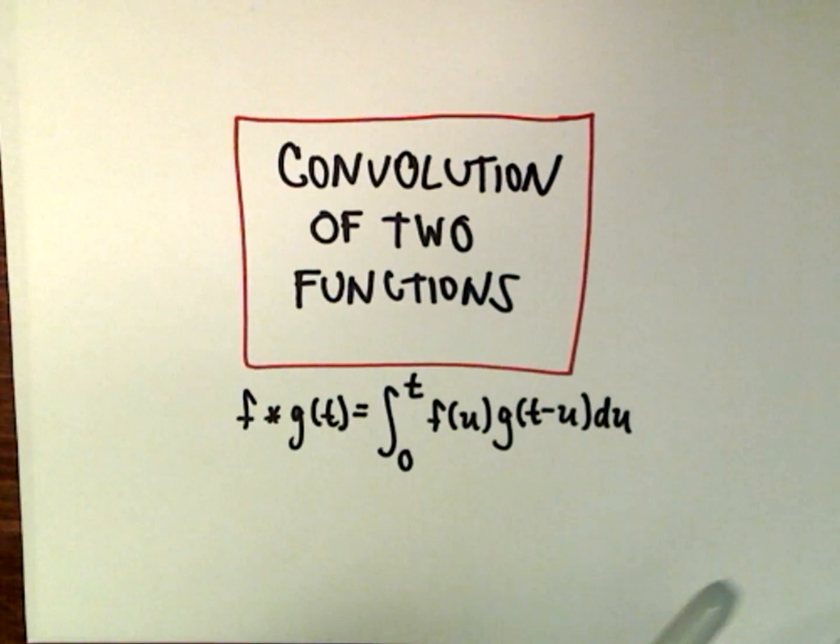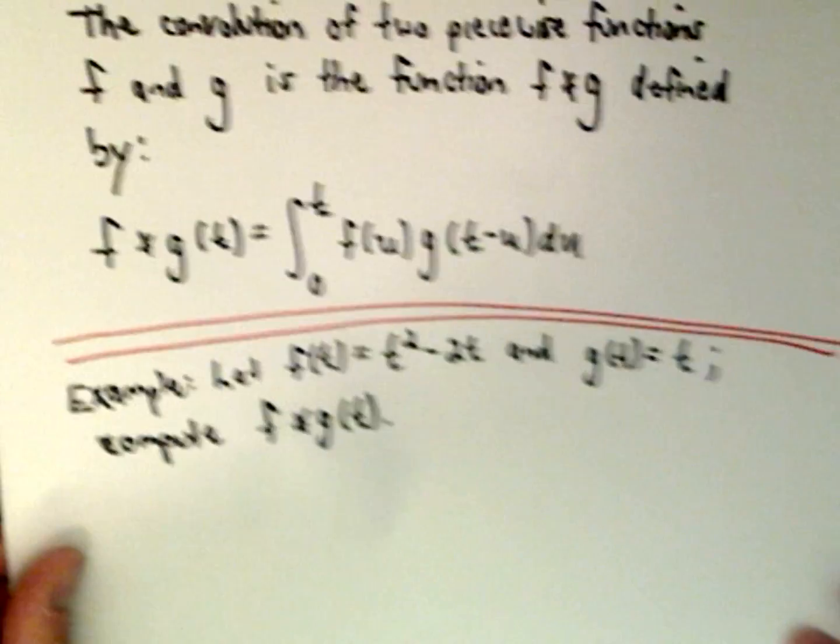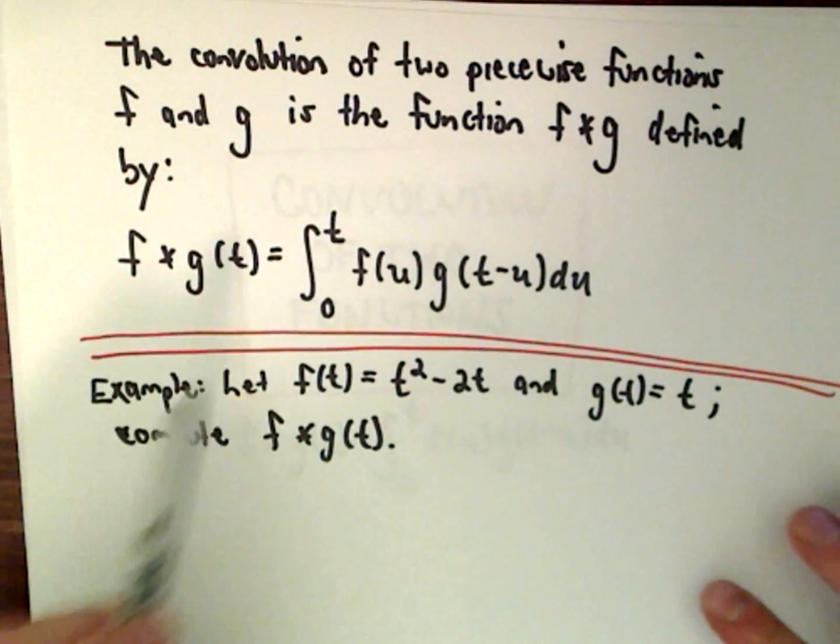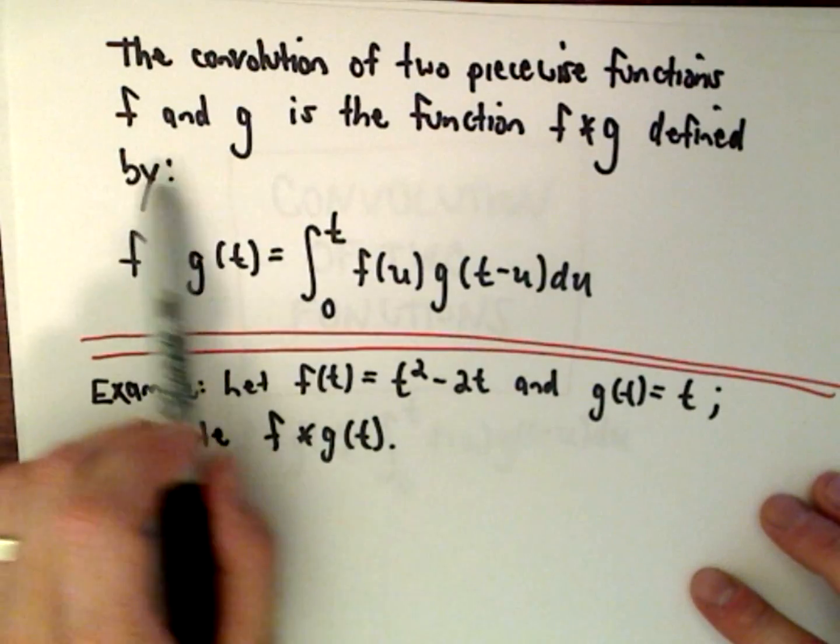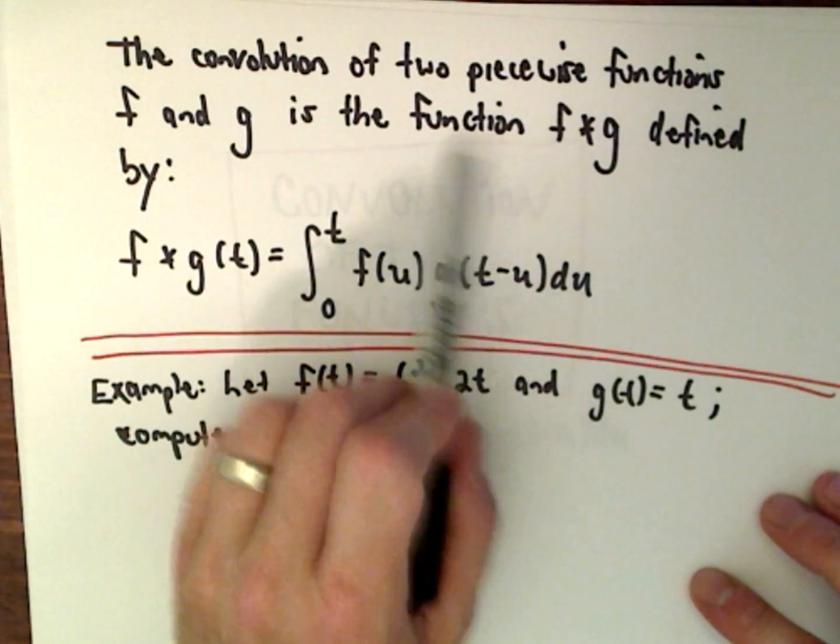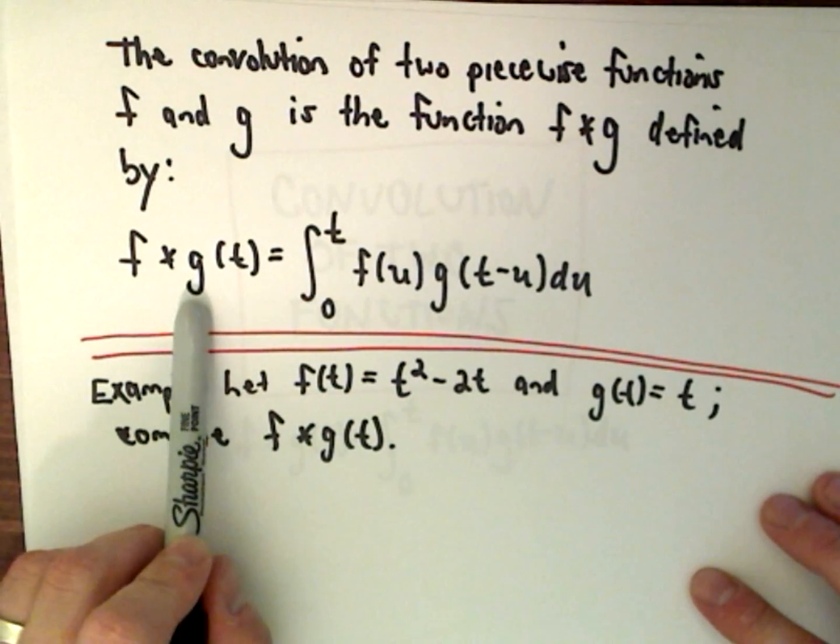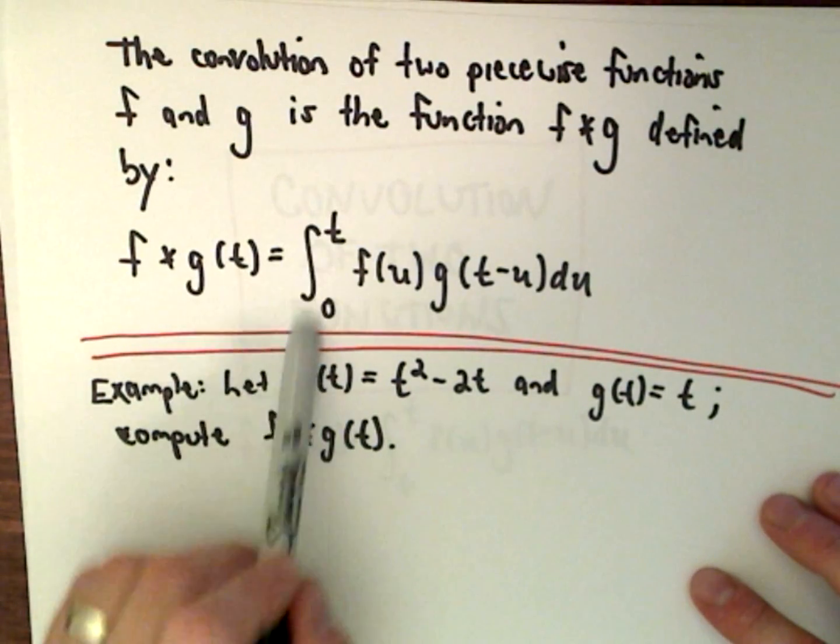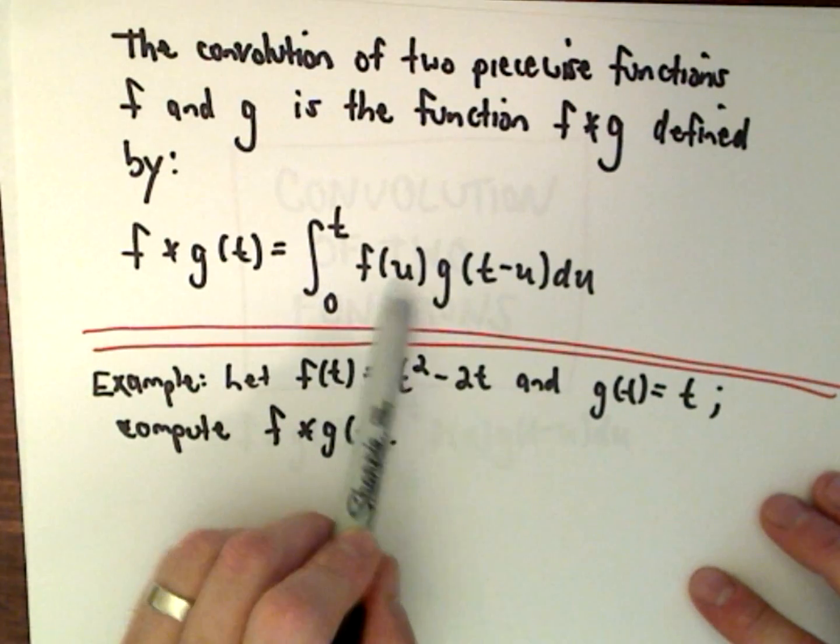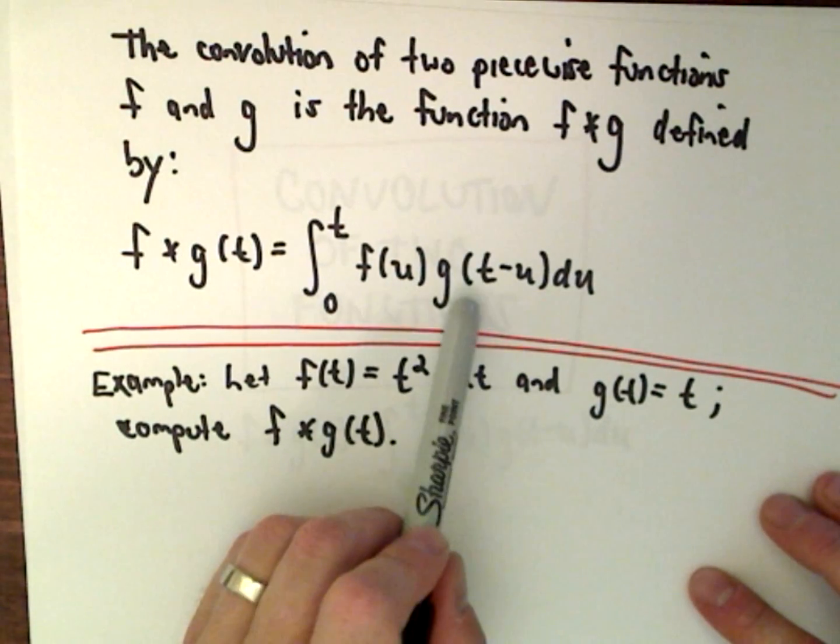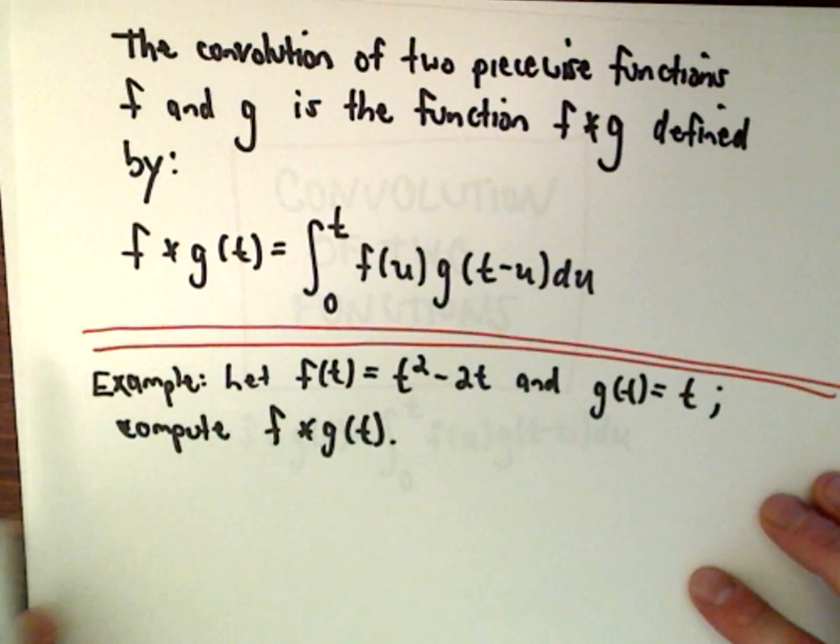Here's the basic formula and a quick little definition. The convolution of two piecewise functions f and g is given by the function f star g, and it's defined by: f star g of t equals the integral from 0 to t of f of u multiplied by g of t minus u, du.